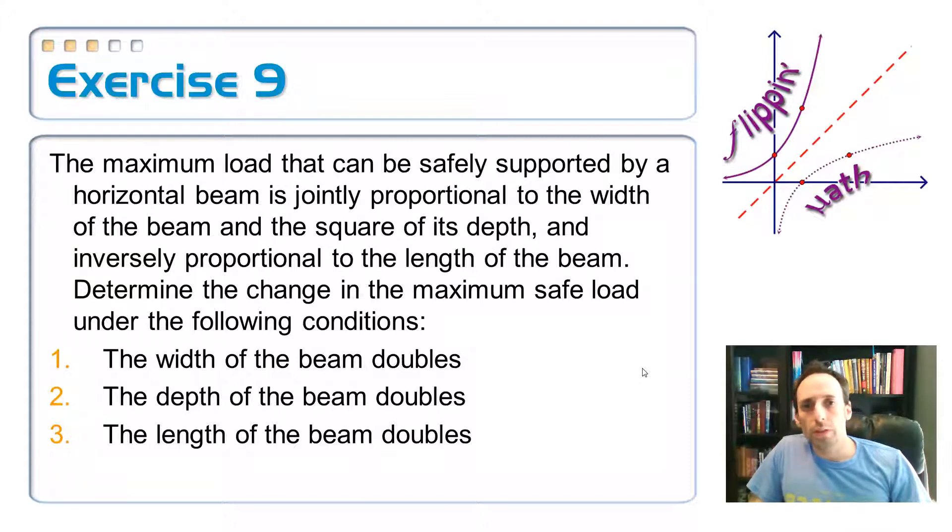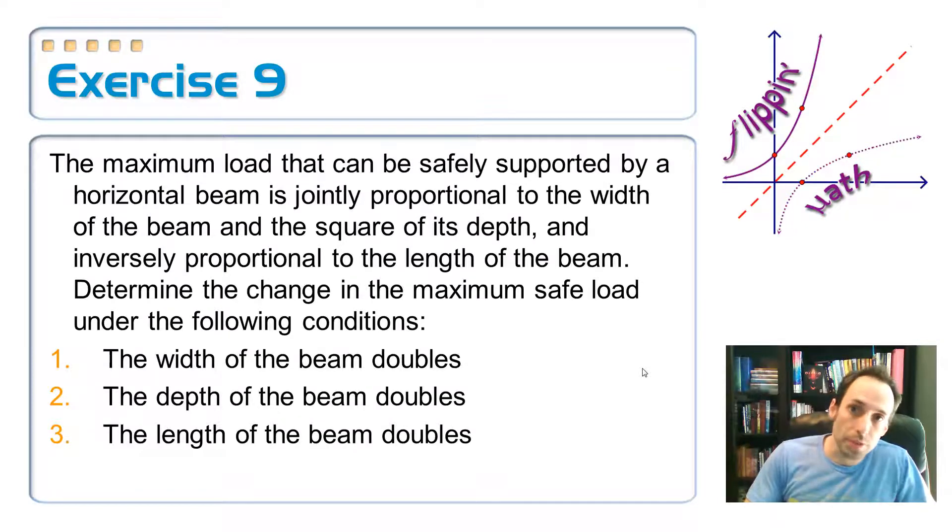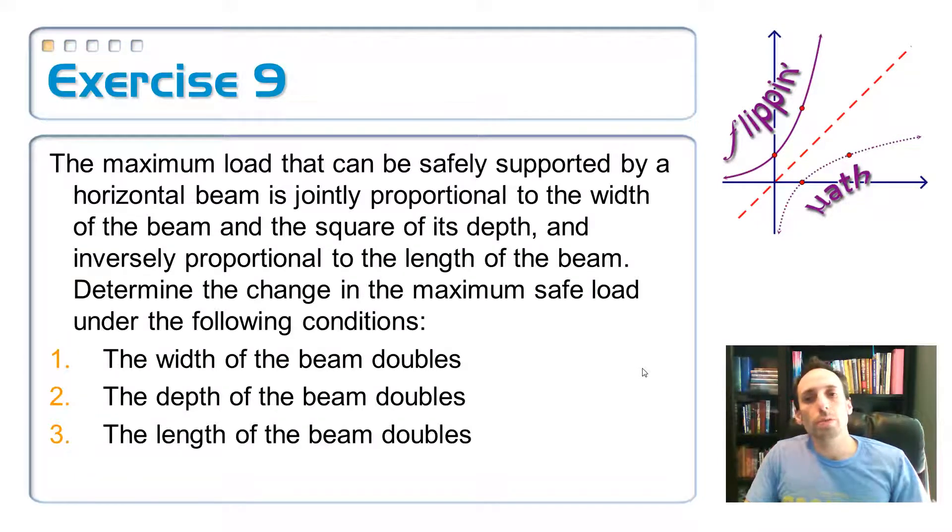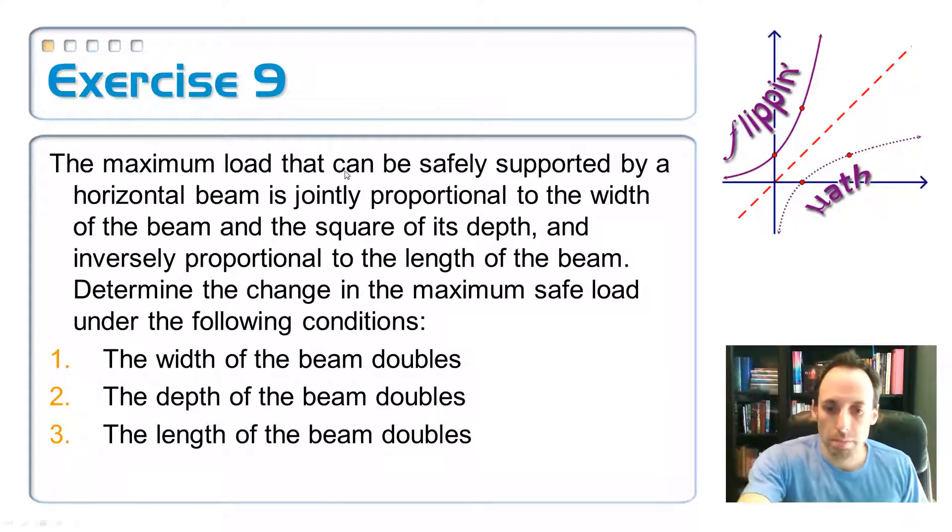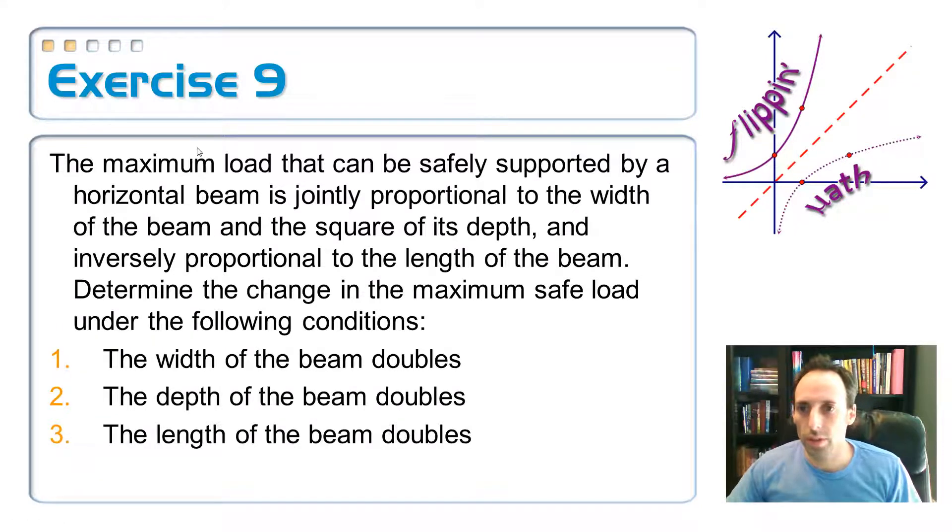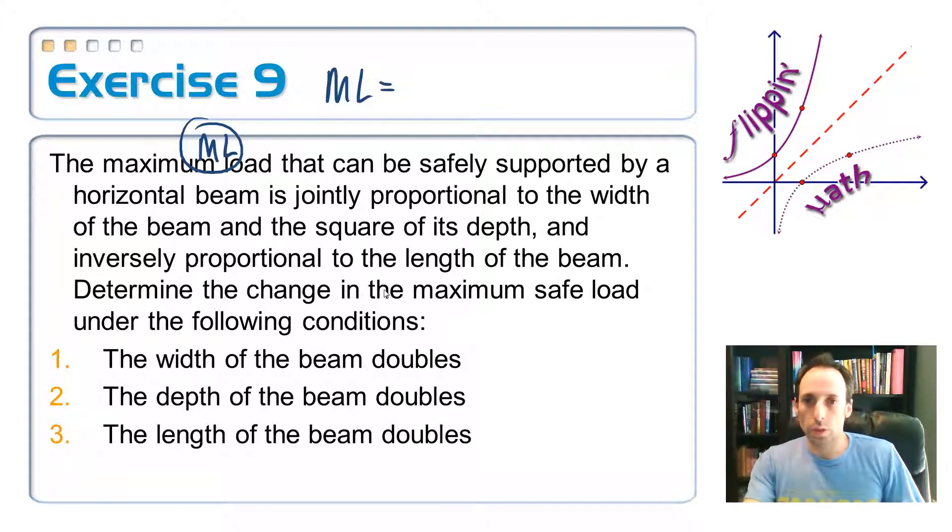Alright, we're almost done with this one. So maximum load that can safely be supported by a horizontal beam is jointly proportional to the width of the beam and the square of its depth and inversely proportional to the length of the beam. Let's write it all down. So I'm going to say maximum load, let's just say that this is ML. Maximum load is equal to, now it says that it is jointly proportional to the width, jointly proportional to the width, and the square of the depth.